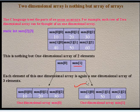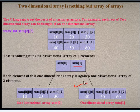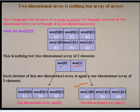I will repeat the entire process again. SAM[2][3] is a two-dimensional array. We can say that it is a one-dimensional array with two elements, that is SAM[0] and SAM[1]. Each of these elements is again a one-dimensional array with three elements. So, SAM[0] is a one-dimensional array with three elements, and SAM[1] is again a one-dimensional array with three elements.